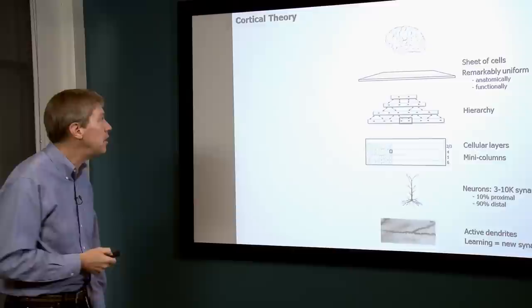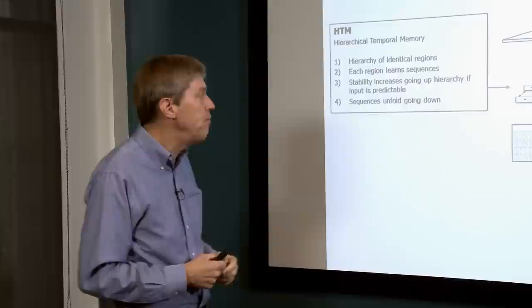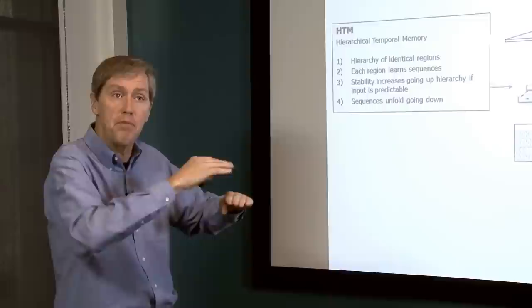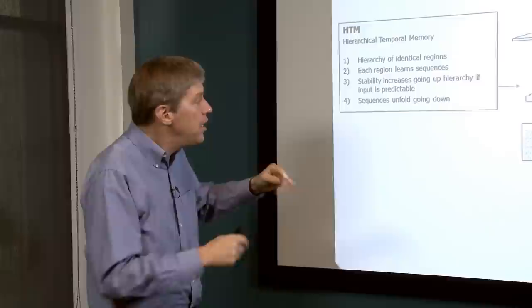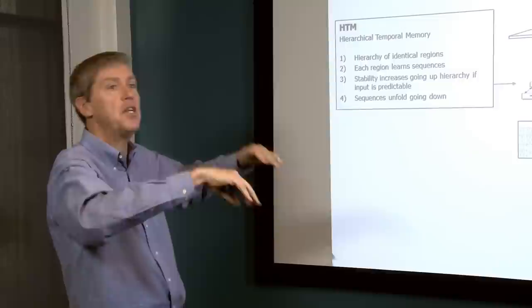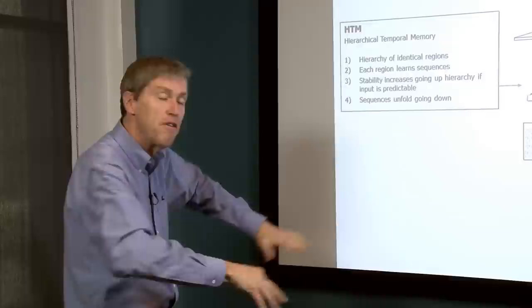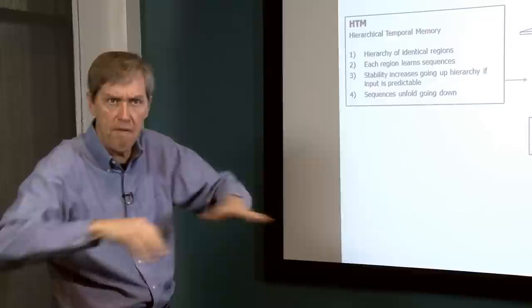We have a theory about how this works called Hierarchical Temporal Memory, or HTM. Its first premise is that the neocortex is a hierarchy of identical regions — that's pretty much a fact. The second premise is that each region learns sequences — the memory in each region is primarily a memory of time-based patterns, like learning melodies. If a region builds a predictive model of a sequence, it creates a more stable representation, like the name of a melody, in the next region up. As you go up the hierarchy you see more stability; coming back down, stable patterns unfold into faster-changing patterns — like speech unfolding high-level concepts into fast-changing sounds.